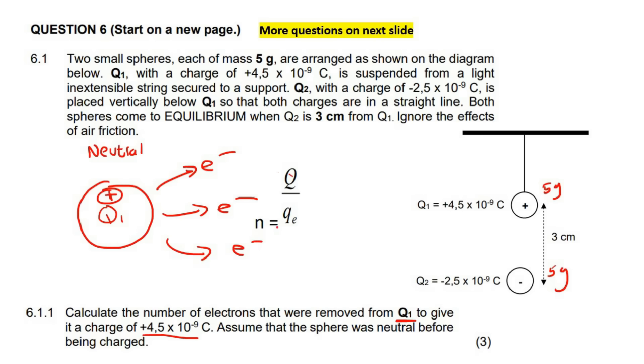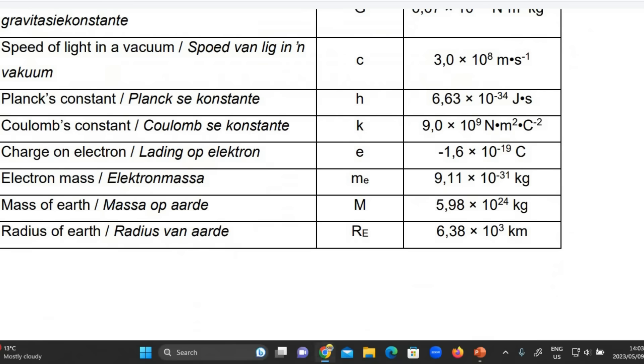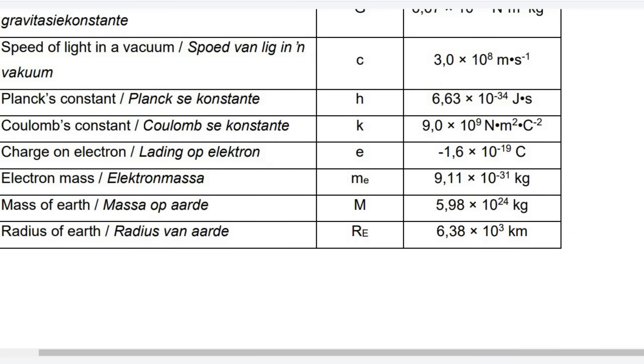The formula goes like this: n equals q over e. This part here is the number of electrons. This is the charge that was transferred. Sometimes on some formula sheets it's a delta q - what was the change in the charge. And then this is the charge of an electron which is on our formula sheet. Here we can see charge on electron is negative 1.6 times 10 to the negative 19.